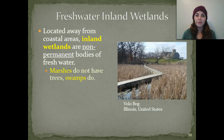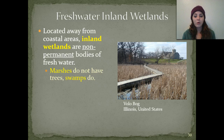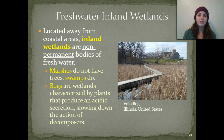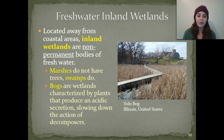The last type of freshwater we're going to talk about is inland wetlands. These are located away from coastal areas and are non-permanent bodies of water. We have different types: marshes, swamps, and bogs. Marshes do not have trees, whereas swamps do. Bogs are wetlands characterized by plants that produce an acidic secretion that slows down the action of decomposers.